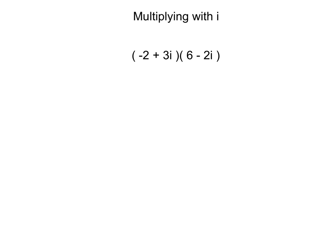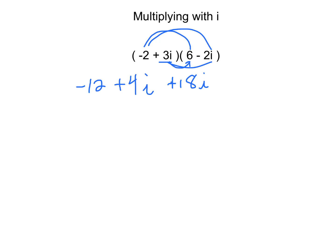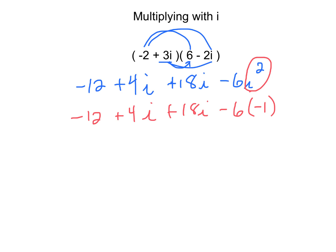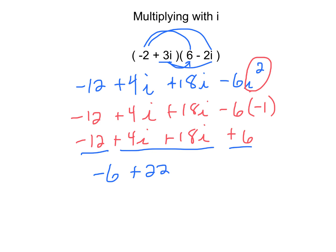We're back. We're going to multiply this: negative 2 times 6 is negative 12, negative 2 times negative 2i is positive 4i, 3i times 6 is 18i, 3i times negative 2i is negative 6i squared. Again, I've got an i squared — I need to evaluate it. So: negative 12 plus 4i plus 18i, and negative 6 times negative 1 is positive 6. Combine the pieces: negative 12 plus 6 is negative 6. 4i plus 18i is 22i. Done — simple, piece of cake.